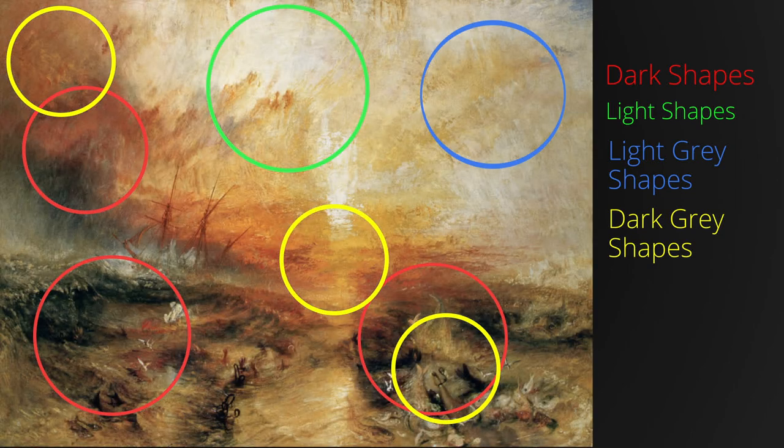So you can see that in studying a large number of great masters' structures, I've found that they nearly always have strong two, three, or four value notan structures, and these very simple structures create very beautiful paintings.